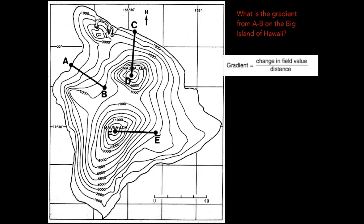The formula for gradient is change in field value over distance. Change in field value is just the change in elevation between A and B.